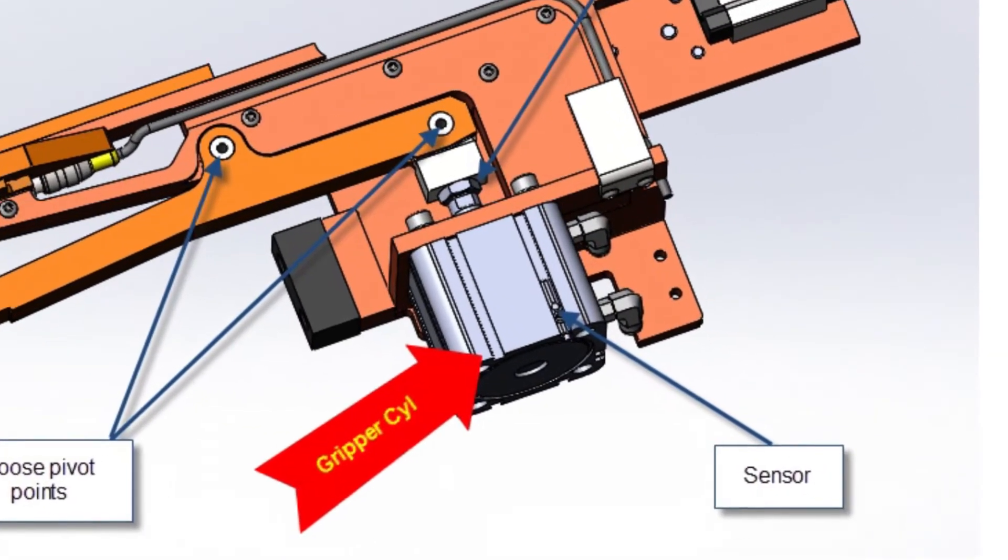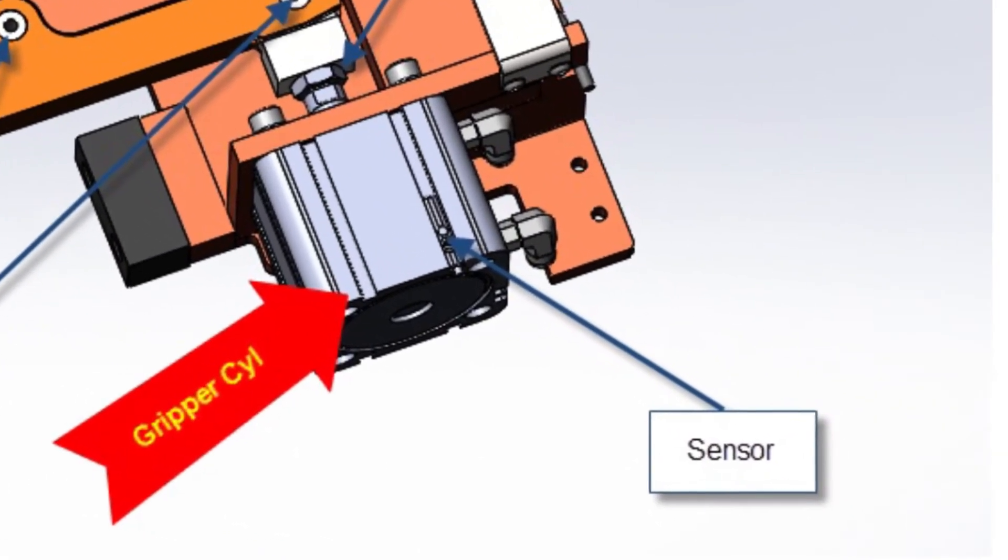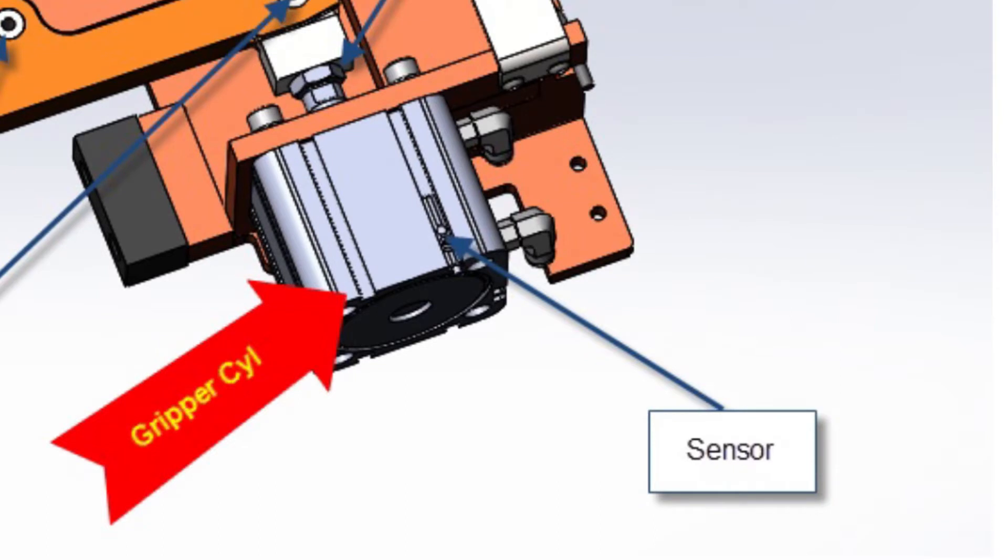If there are no physical reasons for the error, the sensor location probably needs to be adjusted. Keep the saw powered up for step six, but continue to take precautions while troubleshooting with a powered machine.